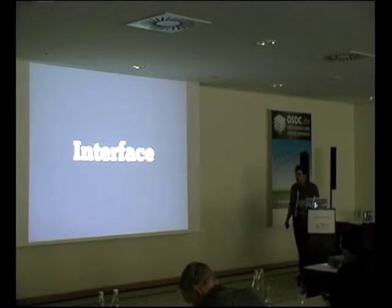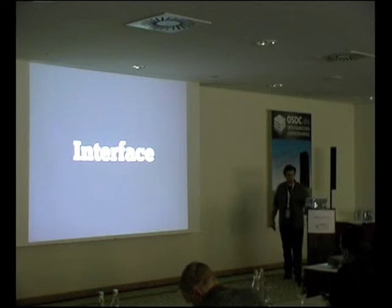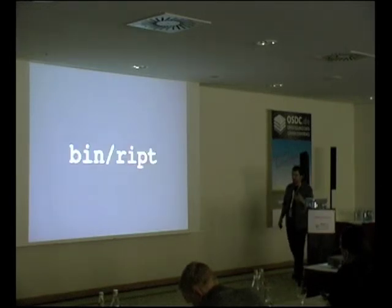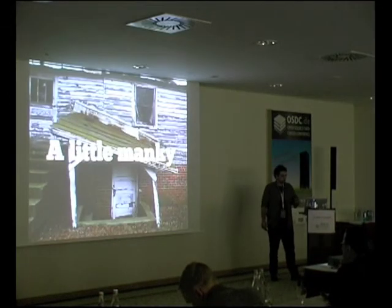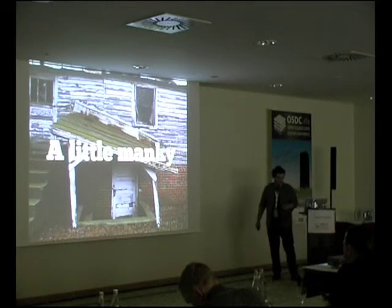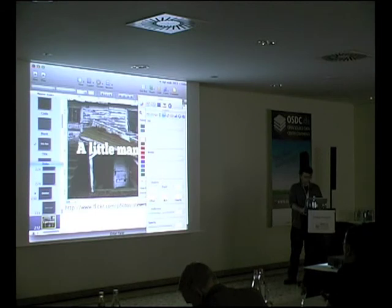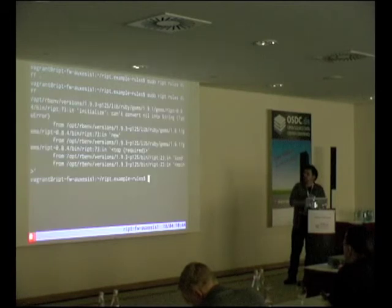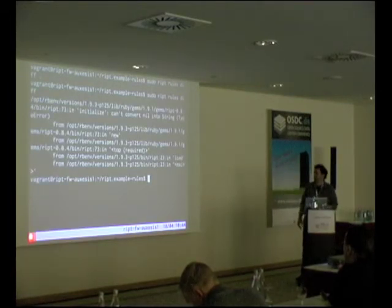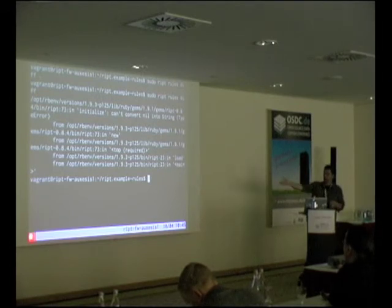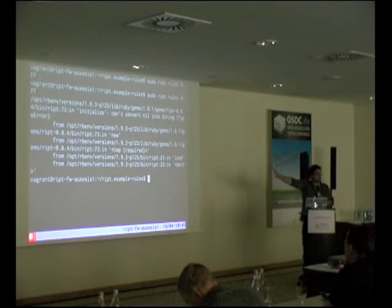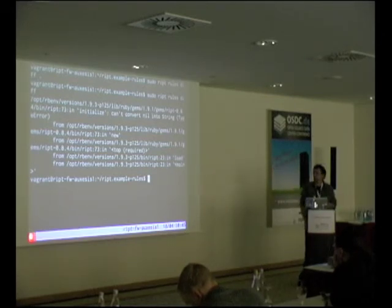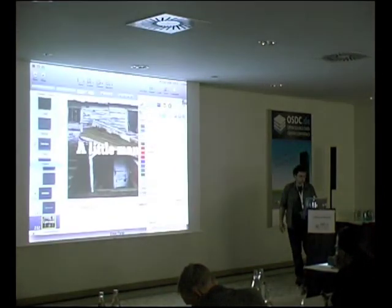Another challenge is the interface. Building the minimum viable product meant starting very concrete, and the interface — the bin file called RIPT — is a little janky. For example, if you run ripped rules diff without passing the current directory dot argument, the error message is not user friendly at all. We've worked around it by building a process that always passes correct inputs, but it's not nice for new users.